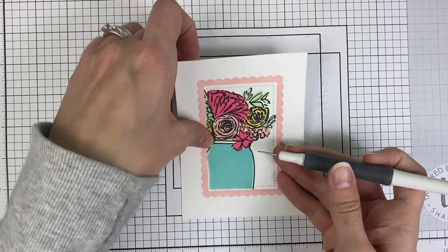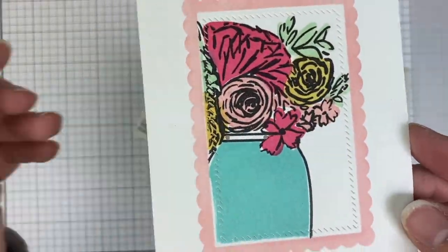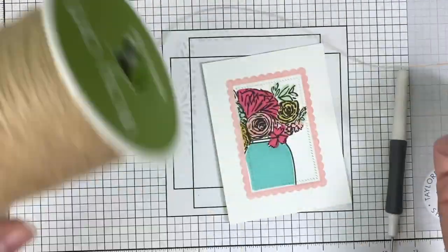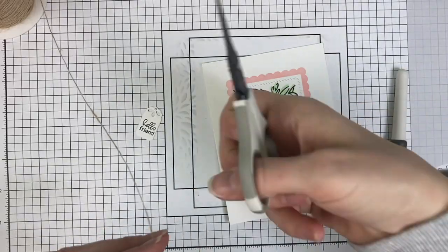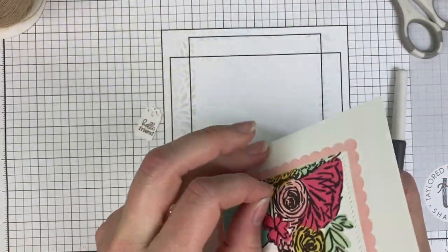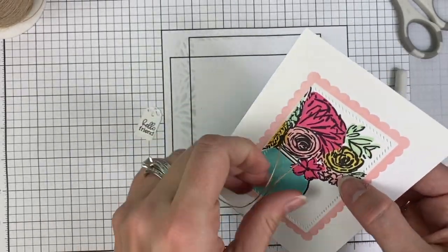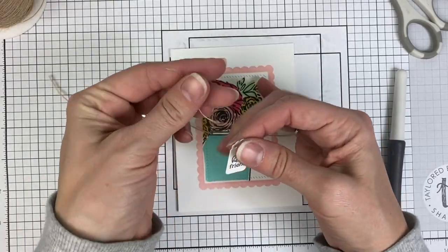I've stamped that first sentiment with the Oreo ink. Now I'm going to tie the tag on using my die pick to poke a couple of little holes, then grab some burlap twine. We'll just tie that tag around the neck of the vase, placing the burlap string through the holes, then threading the small tag onto it and tying it in a bow.